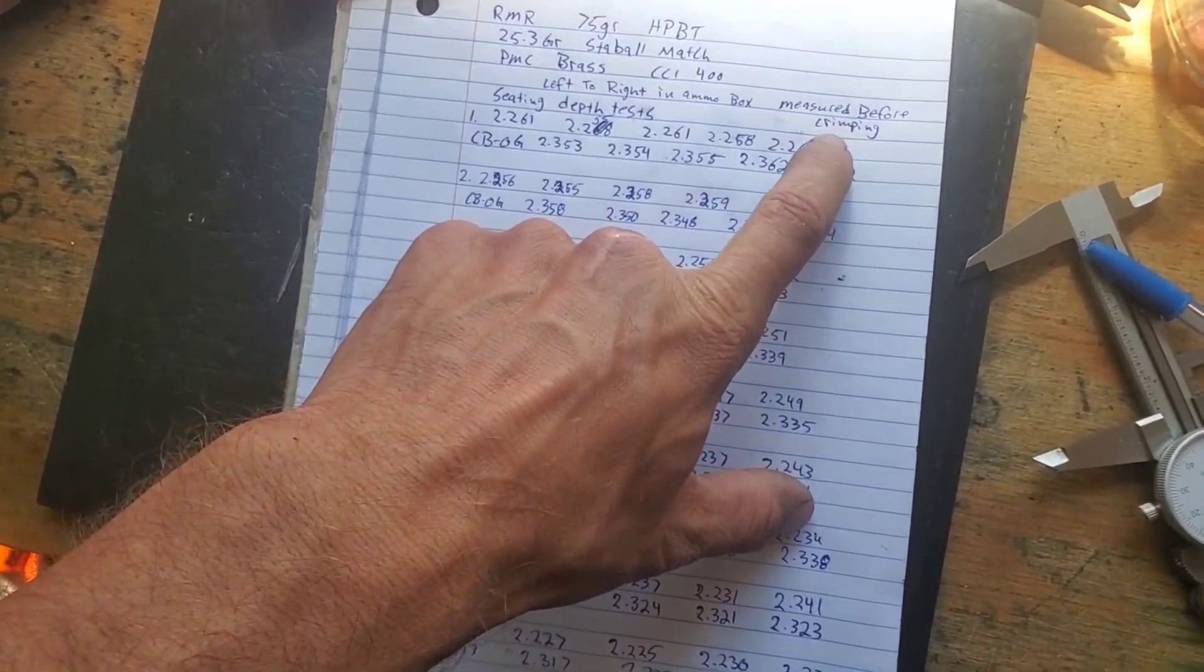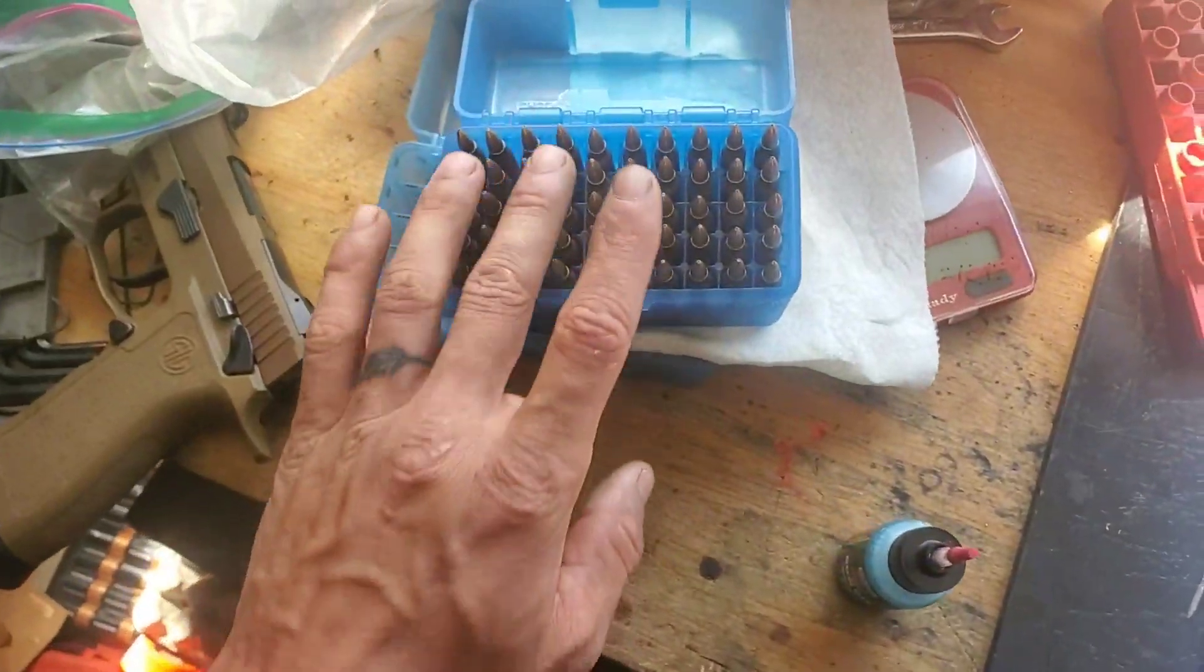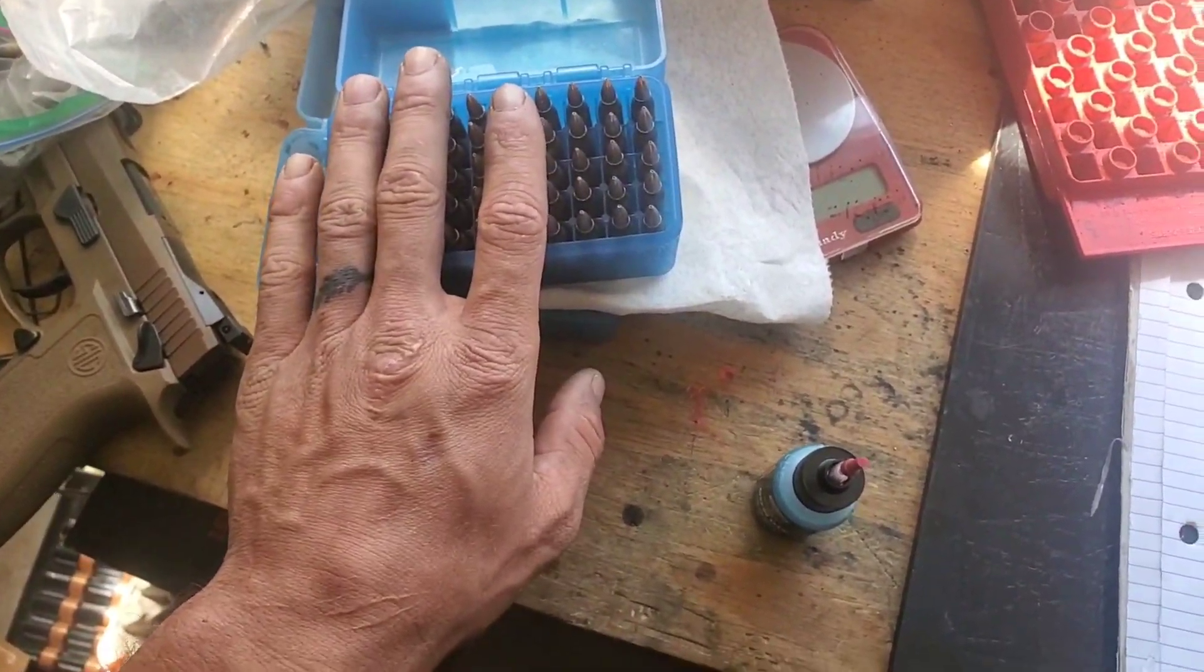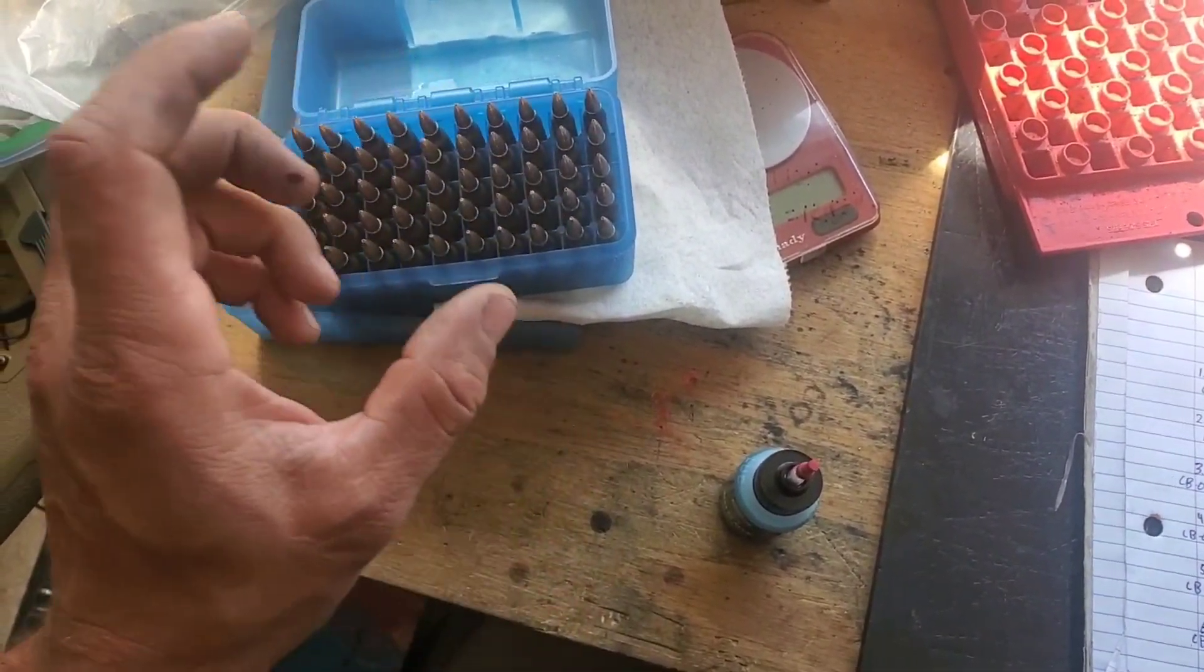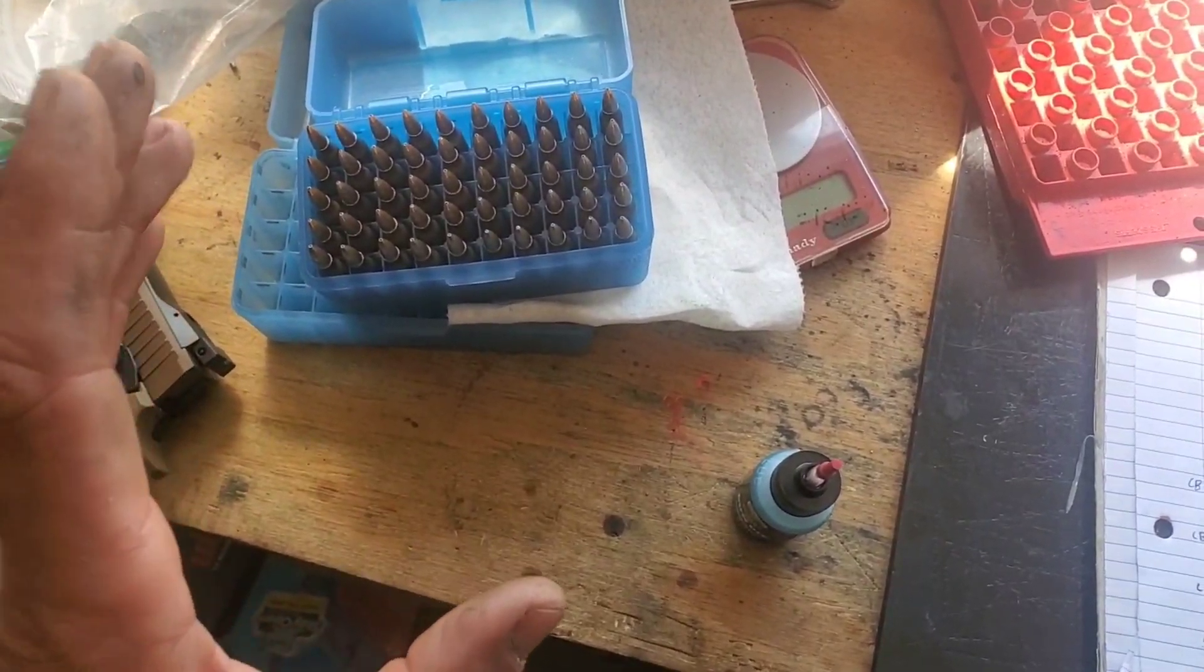I took these measurements before I crimped them, but I'm going to go through and crimp all these right now with a Lee Factory crimp die. And once they're crimped, I'm going to hit the range and we'll see what they do.